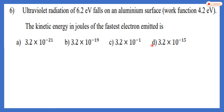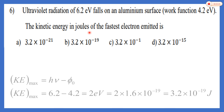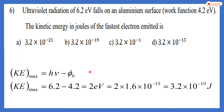Sixth MCQ: ultraviolet radiation of 6.2 eV falls on an aluminium surface (work function 4.2 eV) — calculate the kinetic energy in joules. Using kinetic energy equals h-nu minus phi-zero: 6.2 minus 4.2 equals 2 electron volts. To convert to joules, multiply by 1.6 × 10⁻¹⁹, giving 3.2 × 10⁻¹⁹ joules. That is the kinetic energy in joules.